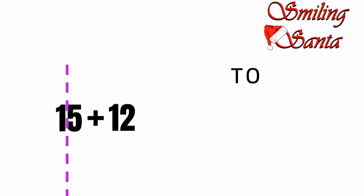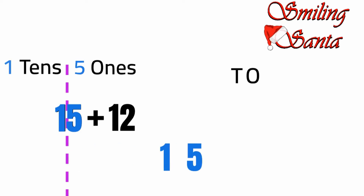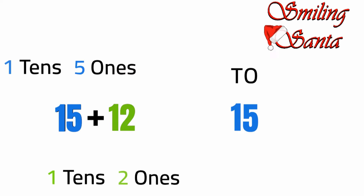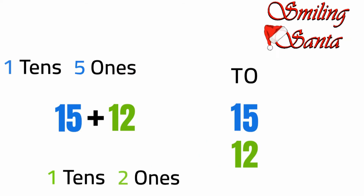Let's arrange our addition first. Always remember, arranging is the first and most important part. Our first number is 15 — we will write it as one ten and five ones. One will go to the tens place and five will go to the ones place. Next is 12 — we will write it as one ten and two ones. One will go to tens place and two will go to ones place.